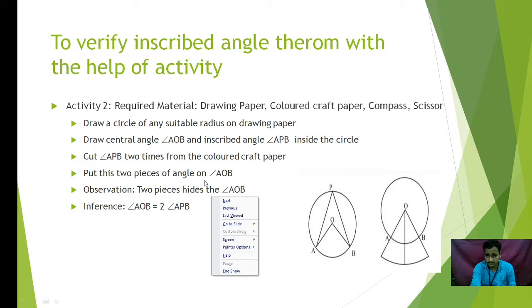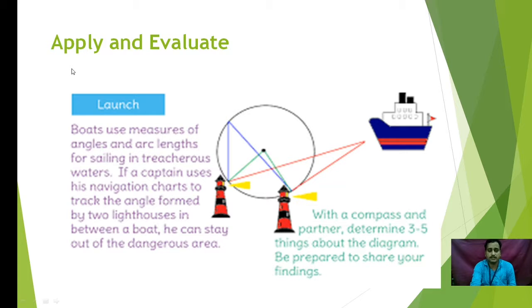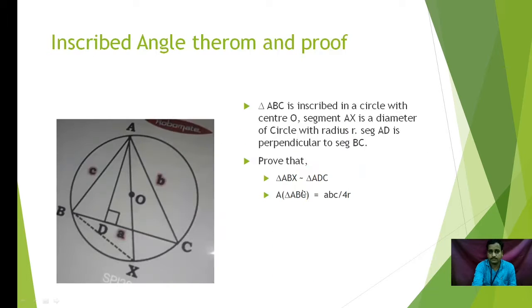Now, the next thing is, apply and evaluate. In apply and evaluate, look at the figure carefully. We all know boats use measures of angles and arc lengths for sailing in treacherous water. If a captain uses his navigation charts to track the angle formed by two lighthouses in between a boat, he can stay out of the dangerous area. So, with the help of compass and partner, determine three to five things about the diagram and be prepared to share your findings.